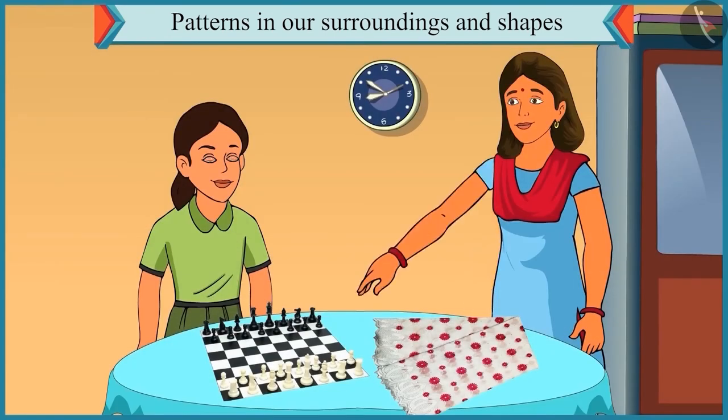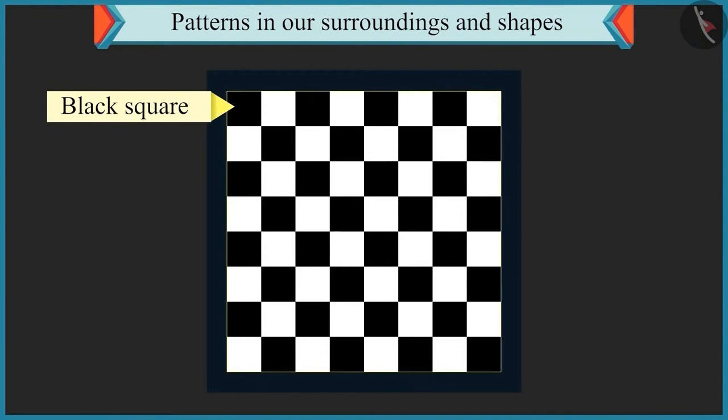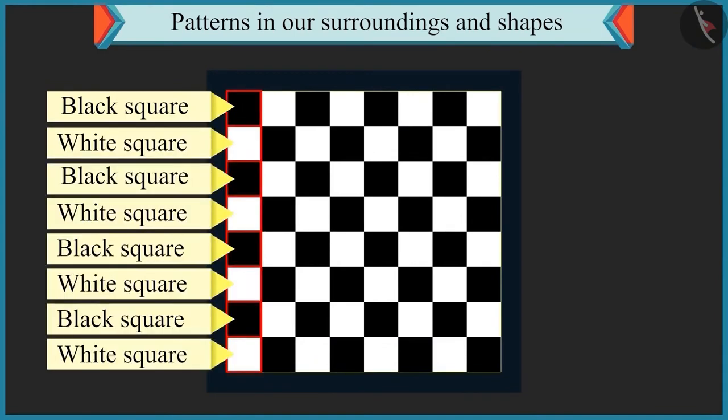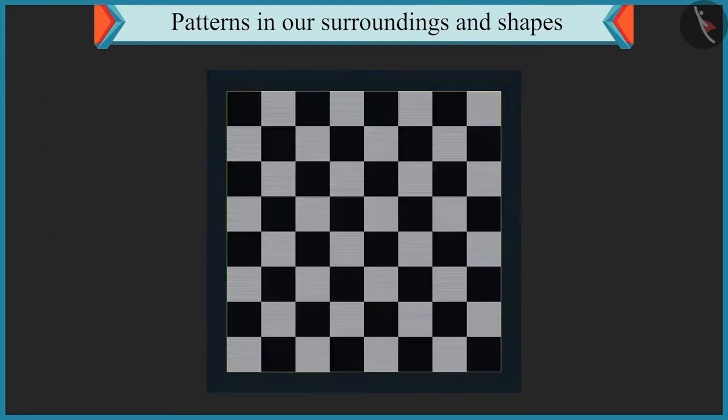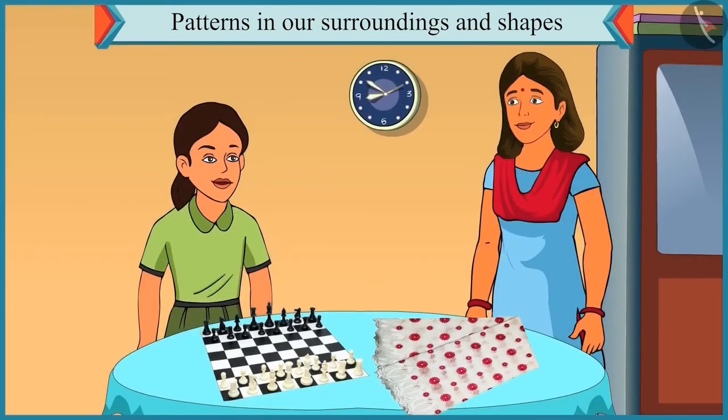Now look at this. A pattern of one black square and then one white square followed by a black square is repeated in a chess board. Oh yes. You are right.